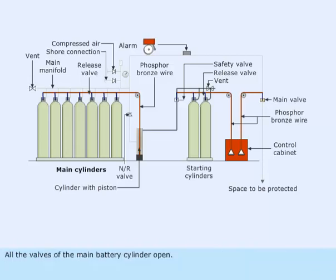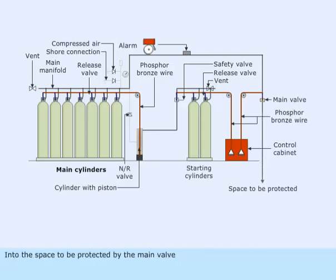All the valves of the main battery cylinder open. The carbon dioxide gas then flows through the main manifold into the space to be protected by the main valve.